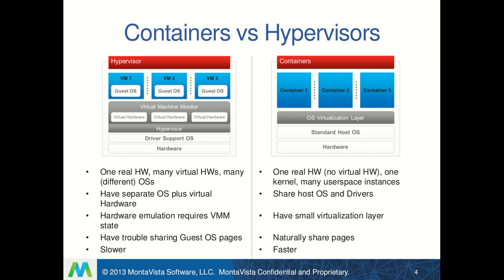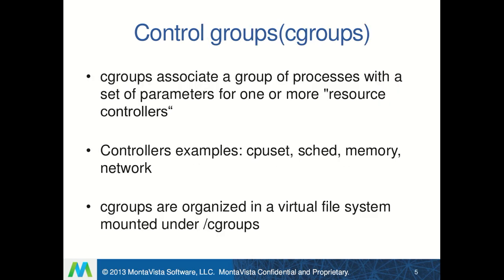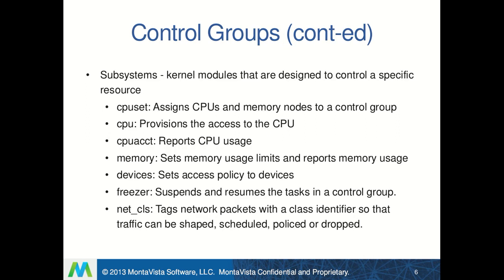In containers we don't have hypervisor layers, which makes containers light and fast. Containers are built on top of two Linux technologies coordinated to provide the illusion of running a separate machine. With the help of cgroups we can limit and allocate resources — these include CPU, network-related, and memory-related resources.